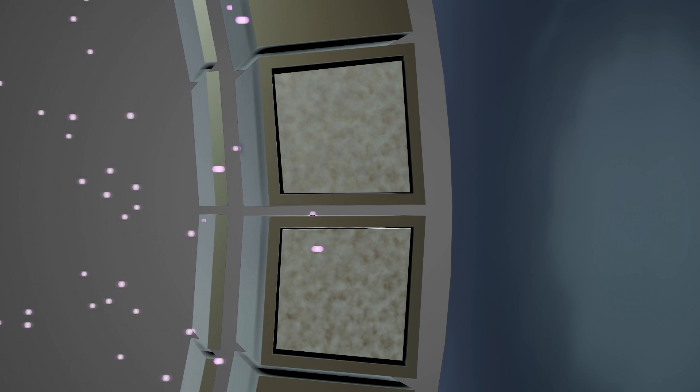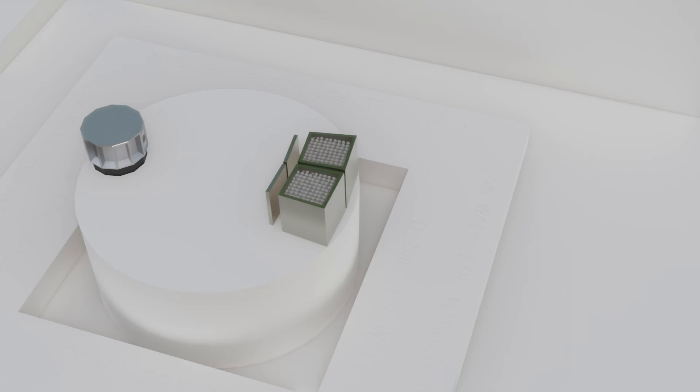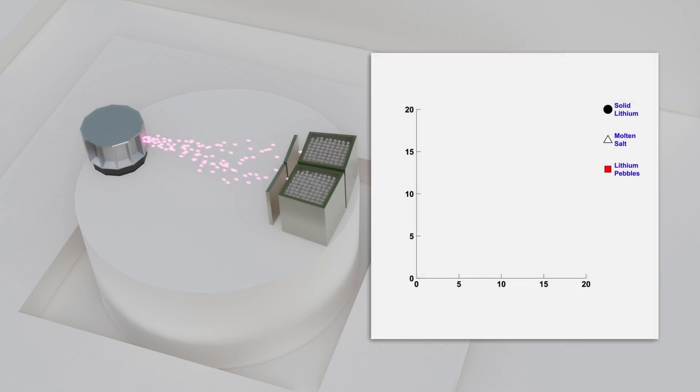Liberty will bring together neutronics models of the breeder engineering components, thermal models of the moving gases and liquids, and physics models of the tritium trapping, permeation and diffusion to simulate each experiment before it is run.